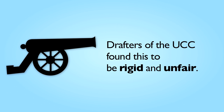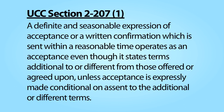The drafters of the Uniform Commercial Code considered this result to be unduly rigid and unfair, especially in light of the fact that the contracting parties negotiate over a contract's essential terms. They rarely haggle over and often do not even read the terms hidden in boilerplate. Accordingly, the drafters adopted Section 2-207 in an attempt to mitigate the unfairness of the mirror-image and the last-shot rules. Let's begin with subpart 1 of that provision.